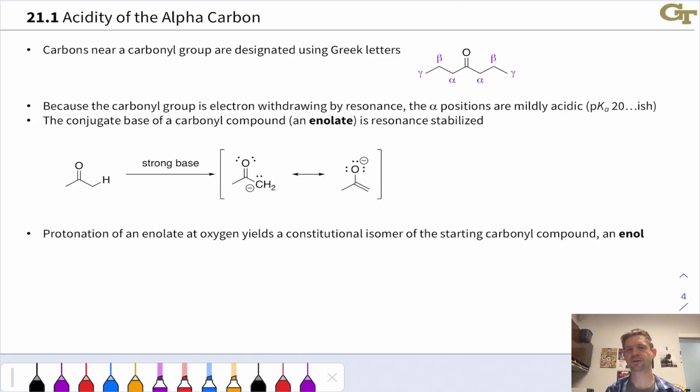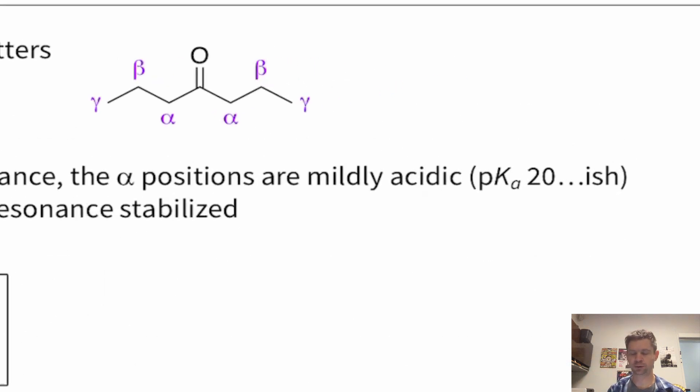To make it easier to talk about carbons in the vicinity of a carbonyl group, we use Greek letters. So here's the carbonyl carbon. The alpha carbons are one carbon away, beta carbons are two carbons away, gamma carbons are three carbons away, etc. You typically won't hear beyond gamma. The two most important carbons, without question, are the alpha and beta positions. And for this unit, the alpha position is most important for sure.